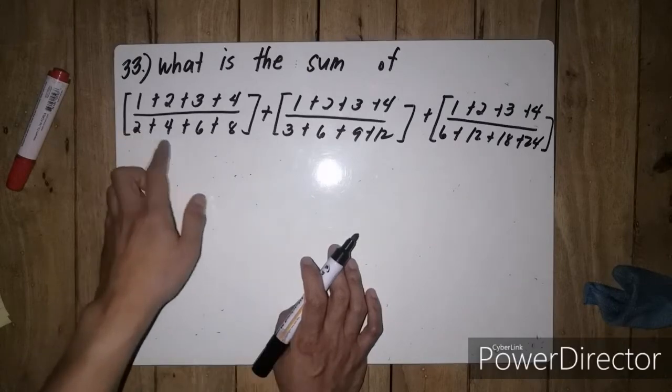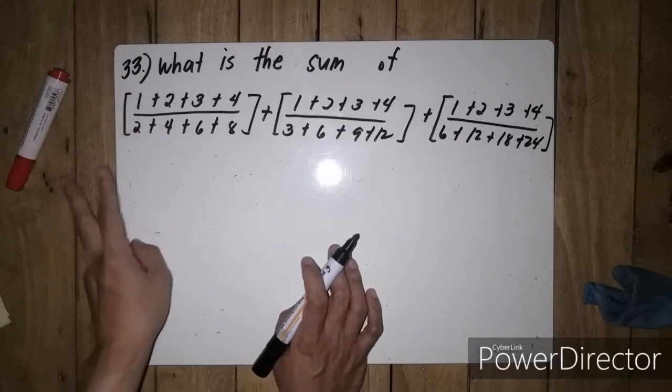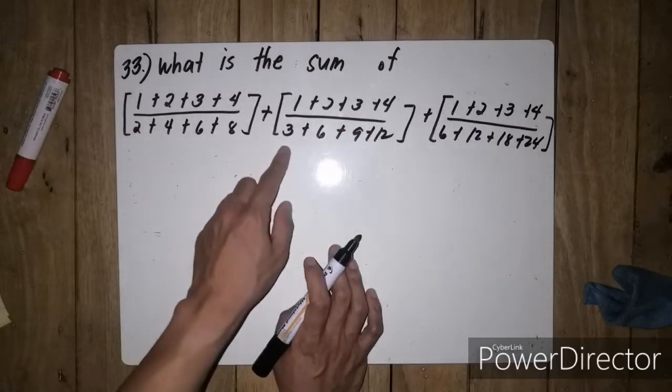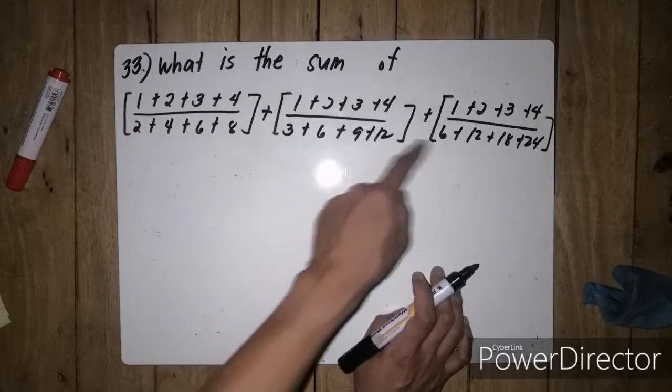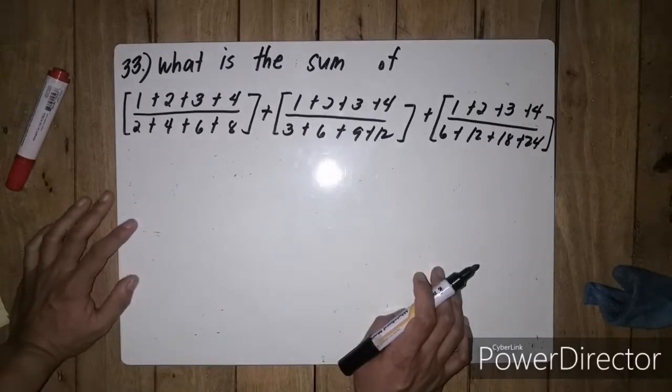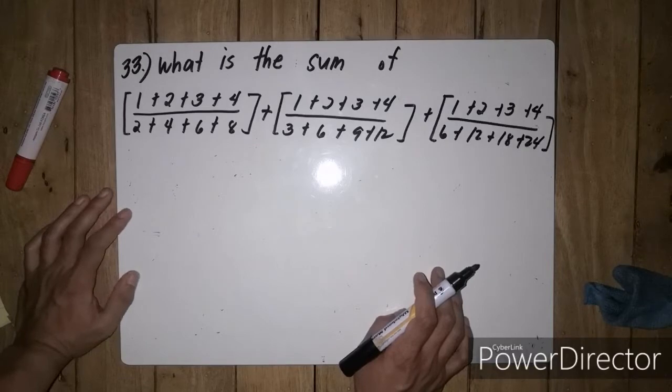If you notice, 2, 4, 6, 8 have a common factor of 2. Then 3, 6, 9, 12 have a common factor of 3. And 6, 12, 18, and 24 have a common factor of 6.